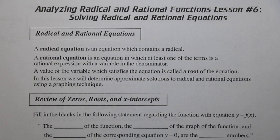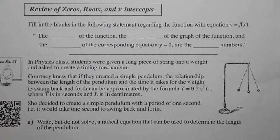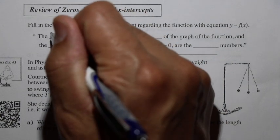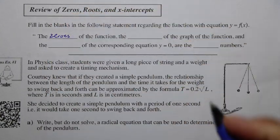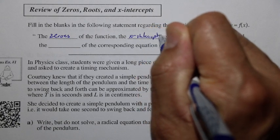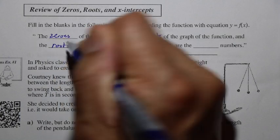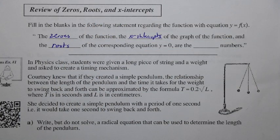In this lesson, we will determine approximate solutions to radical and rational equations using the graphing technique. Let's review zeros, roots, and x-intercepts. By now you'll realize that there's a relationship between zeros, roots, and x-intercepts. Let's fill in the blanks with that relationship. The zeros of the function, the x-intercepts of the graph, and the roots of the corresponding equation, where y equals zero, are all the same numbers.